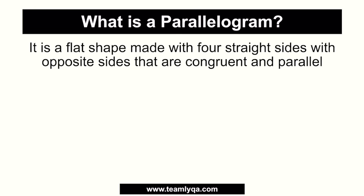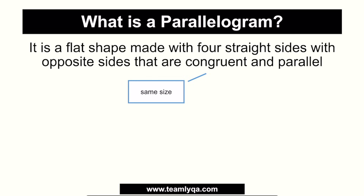Now, to better understand this, what does congruent and parallel mean? Congruent means that they are of the same size. So again, we're talking about opposite sides — yung opposite sides niya are of the same size. And parallel means that they are made up of lines that will never intersect. To see this more clearly, let's start with a sample.